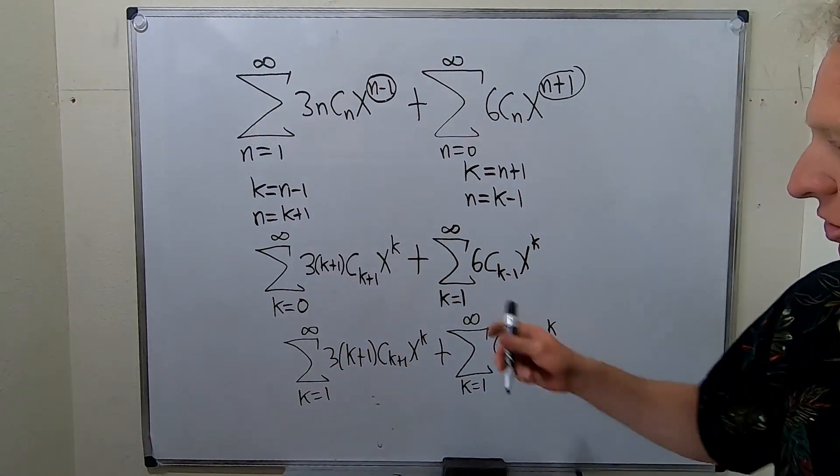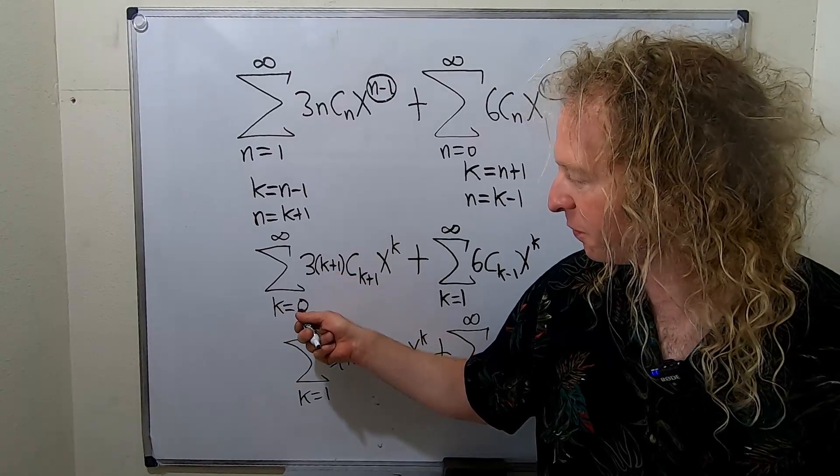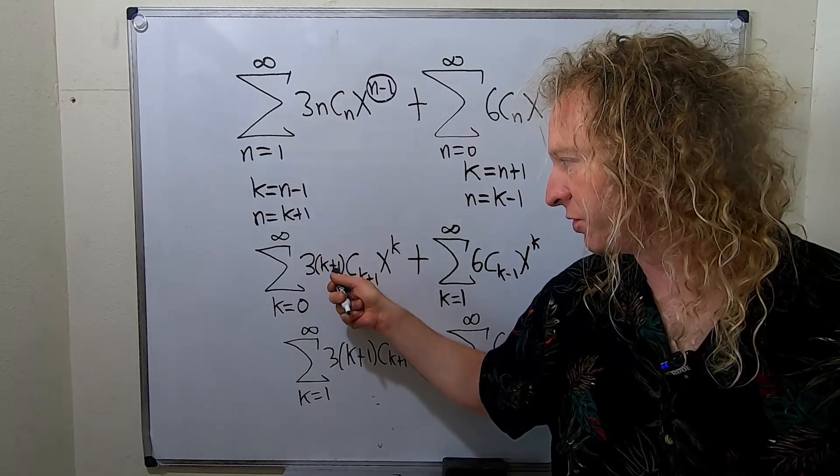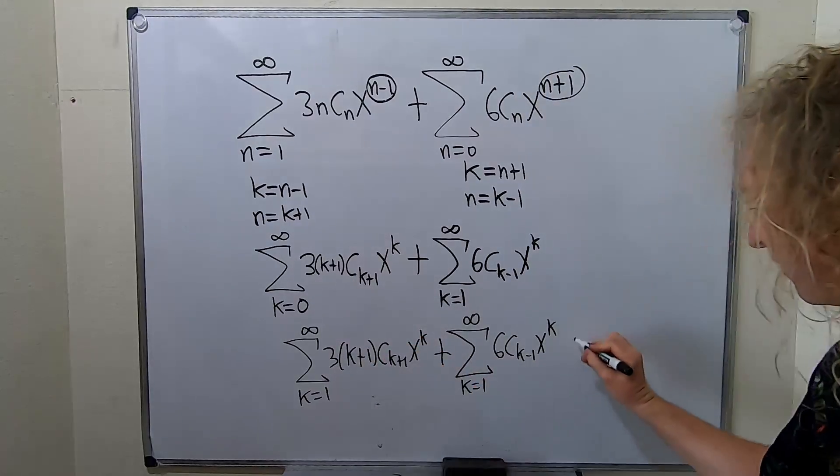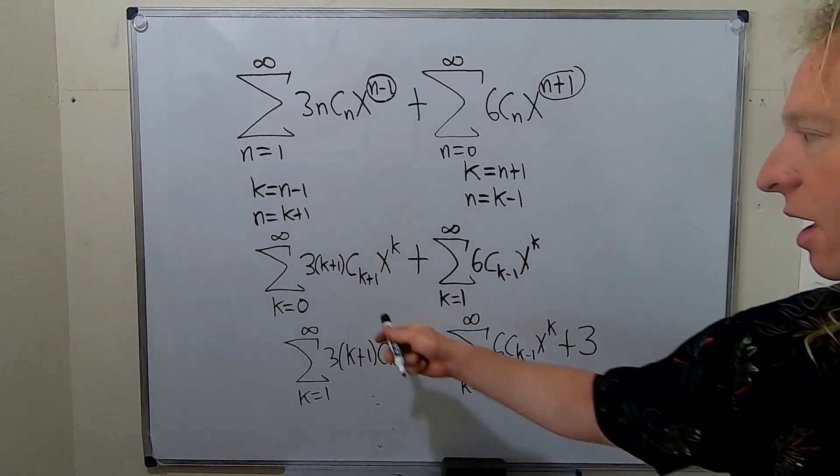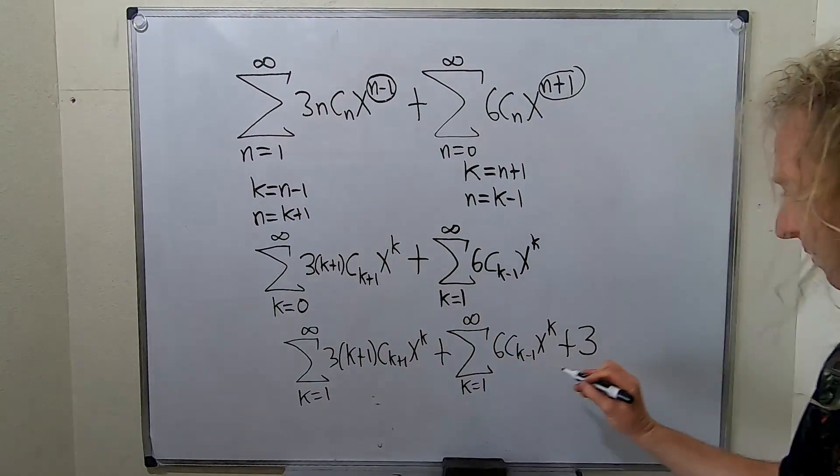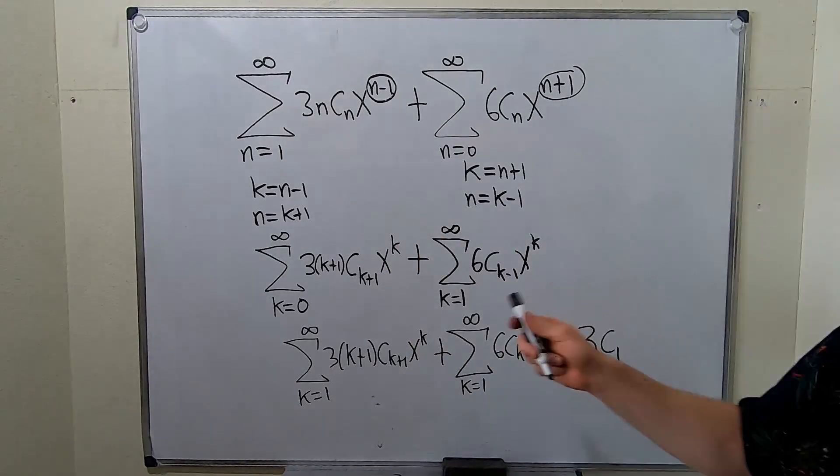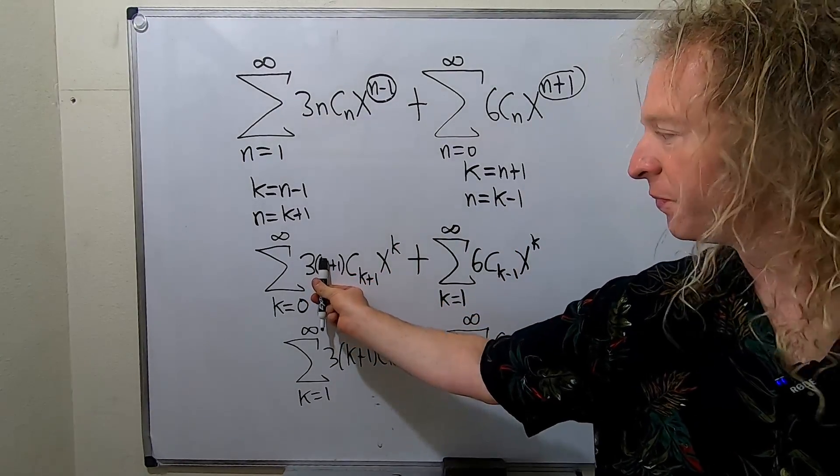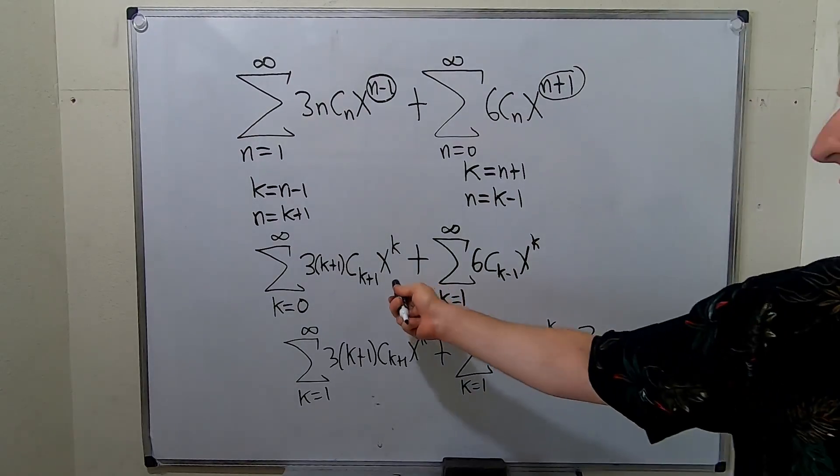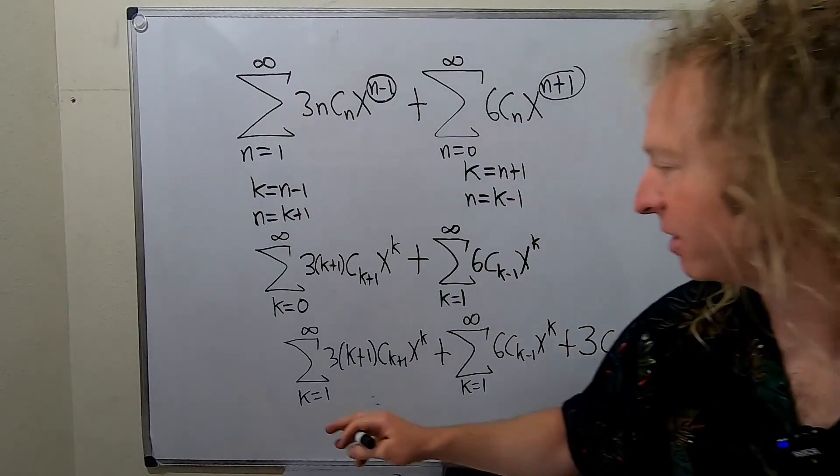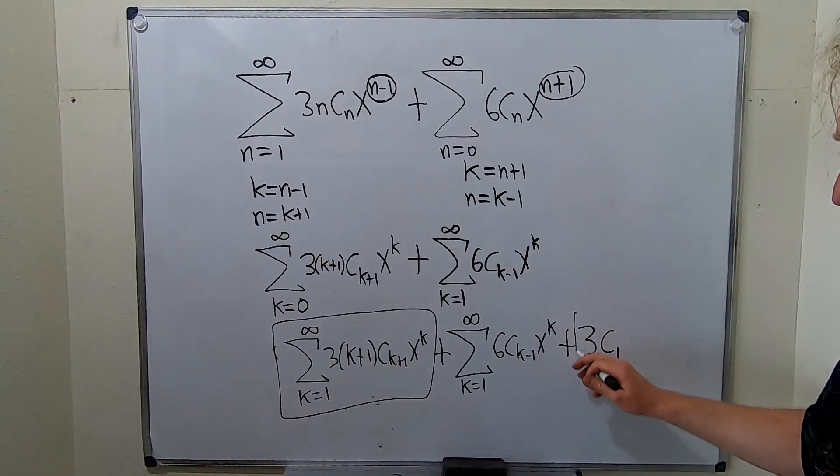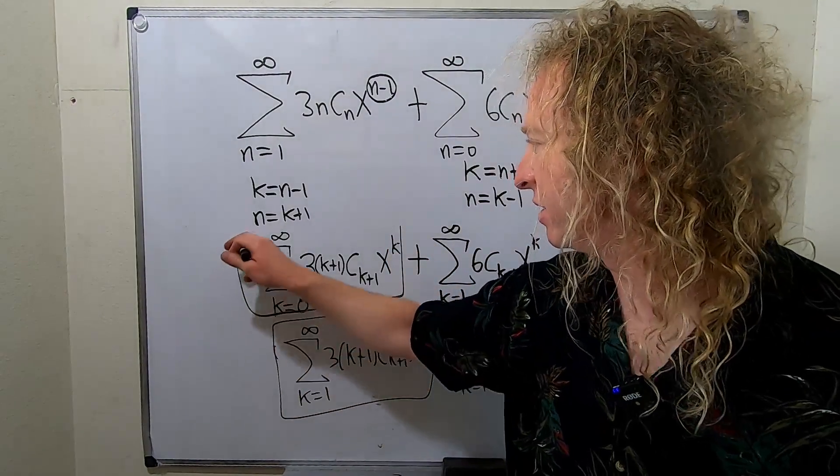So what do we do? We have to write it down. So how do we do that? We just plug in 0. So if you plug in 0 here you get 3 times 0 plus 1, so you get 3 C sub 1 x to the 0 is 1. Again, if you plug in 0 here you get 3 C sub 1. X to the 0 is 1.